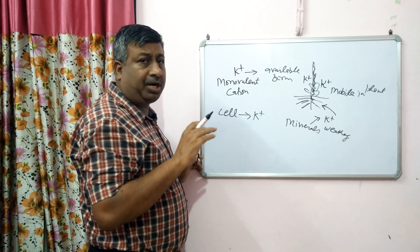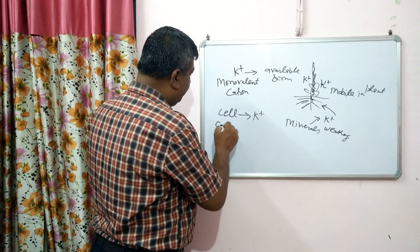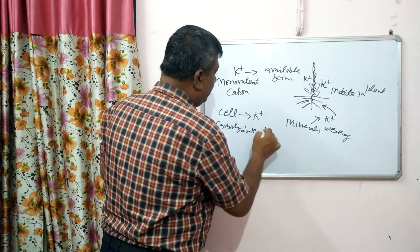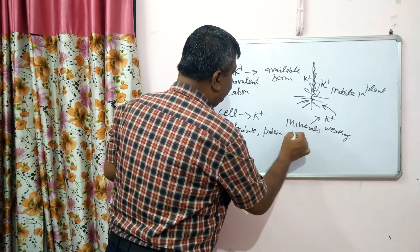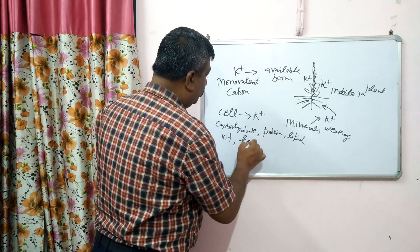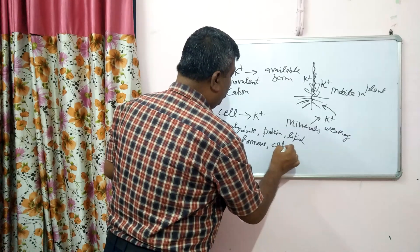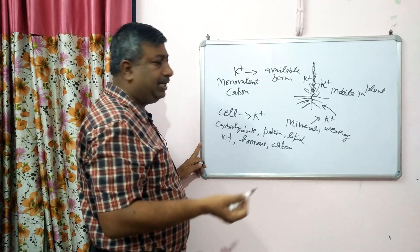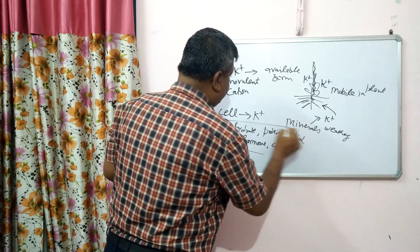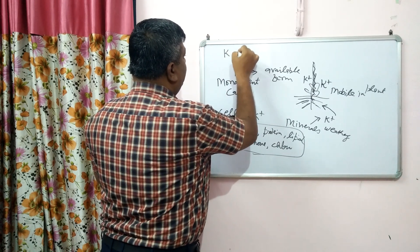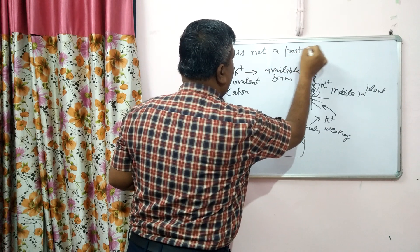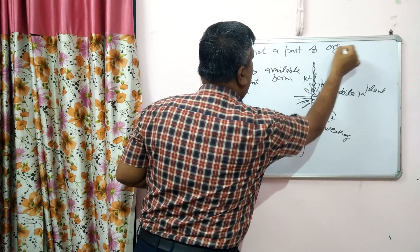Potassium is not a part of carbohydrates, not a part of protein, not a part of lipids, not a part of vitamins, not a part of hormones, not a part of chlorophyll, not a part of DNA, RNA, or nucleic acids. It is not a part of any organic structure.